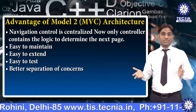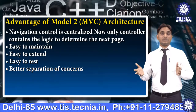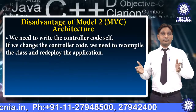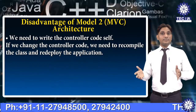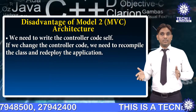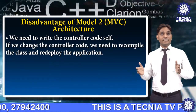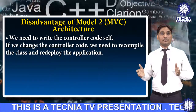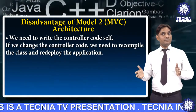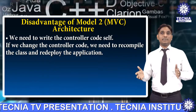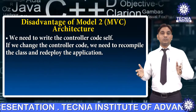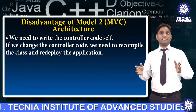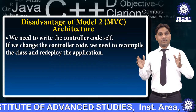Better separation of concern. There are various advantages followed by MBC architecture. Disadvantage of Model 2 architecture: if we need to write the controller code ourselves, and if we change the controller code, we need to recompile the class and redeploy the application.